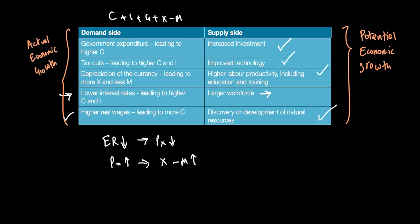Lastly, any discovery or development of natural resources can make our LRAS shift out or PPC shift to the right. So any improvement in the quality or quantity of factors of production can lead to potential output going up.